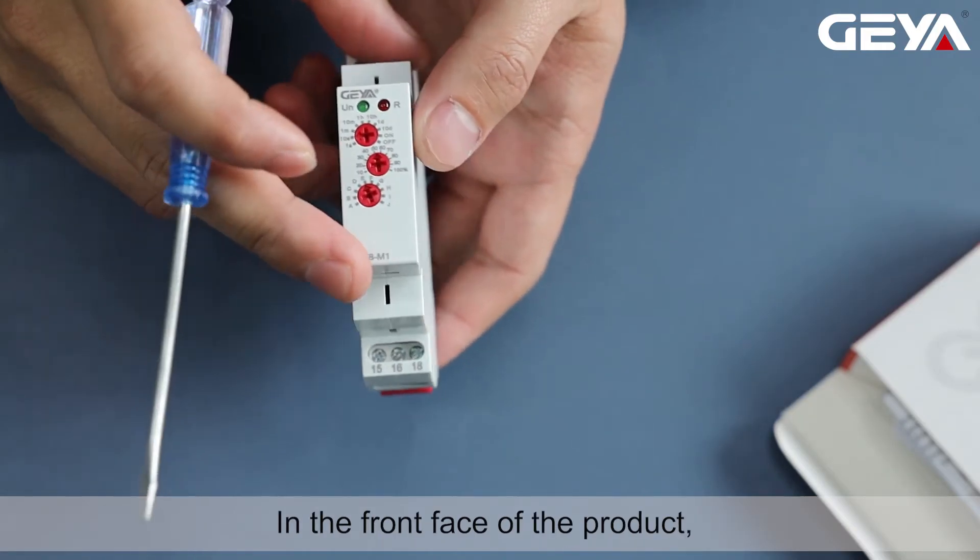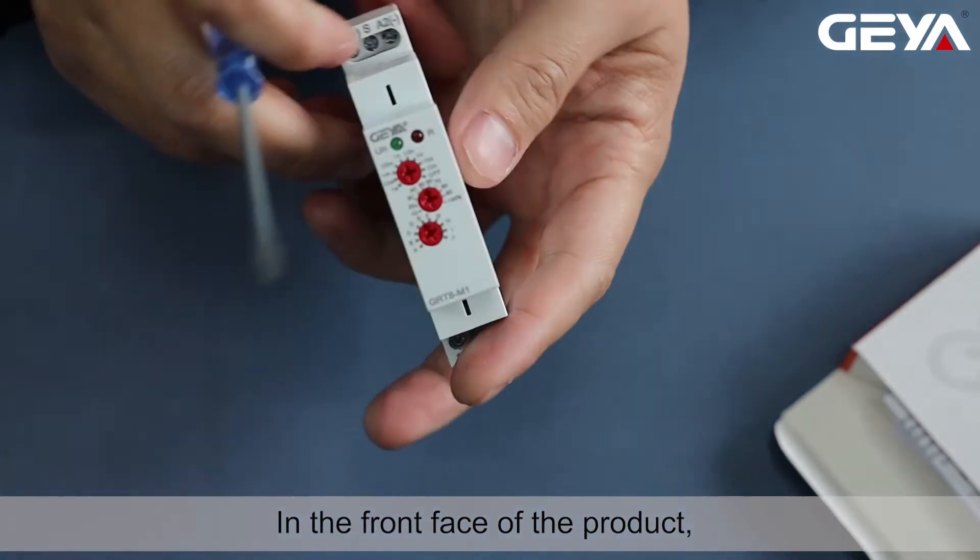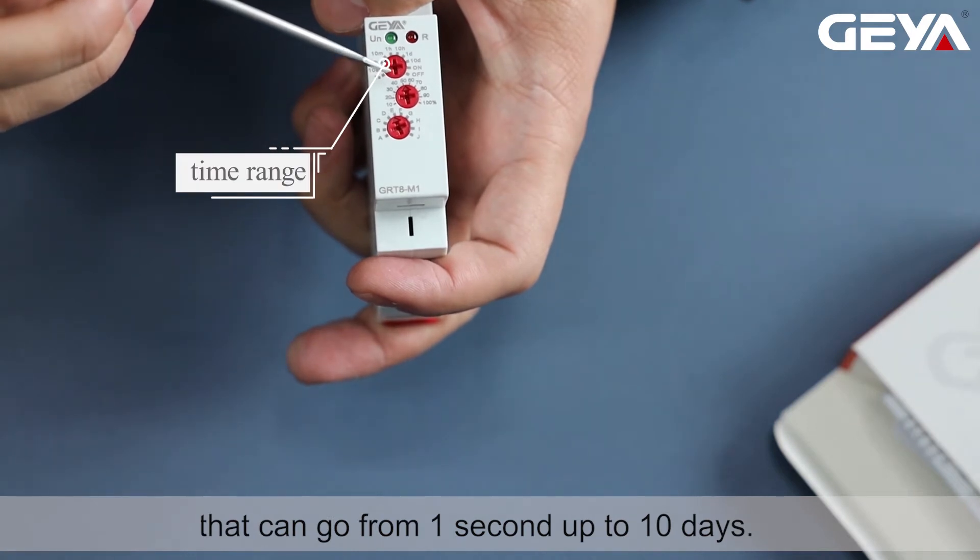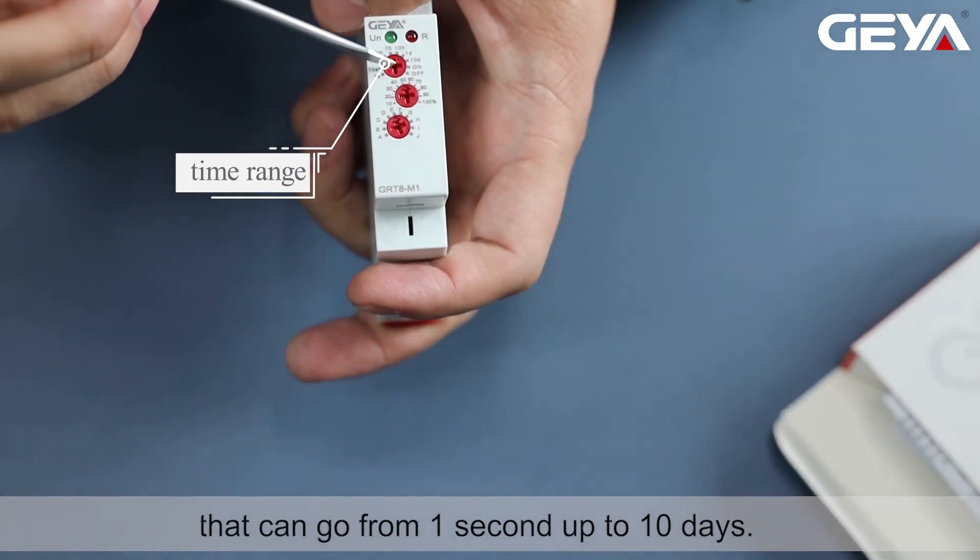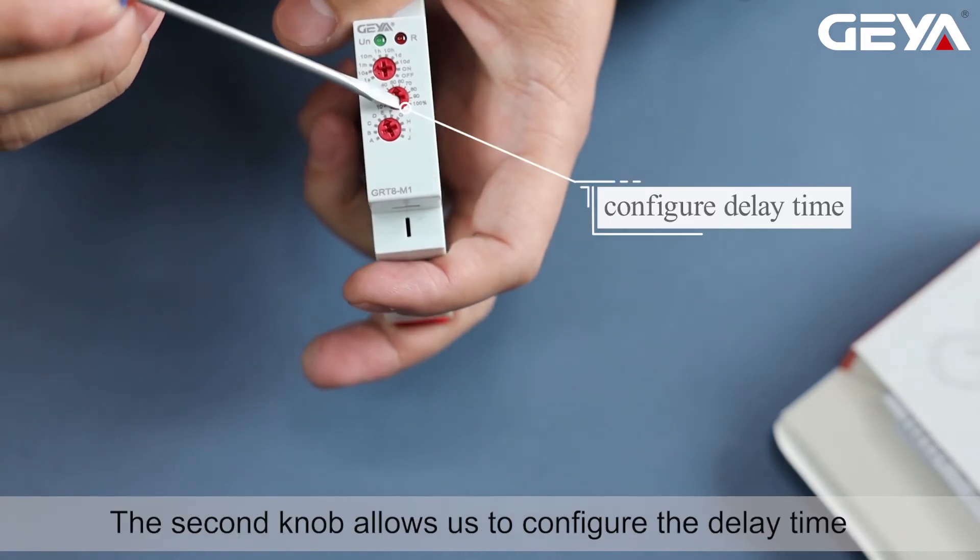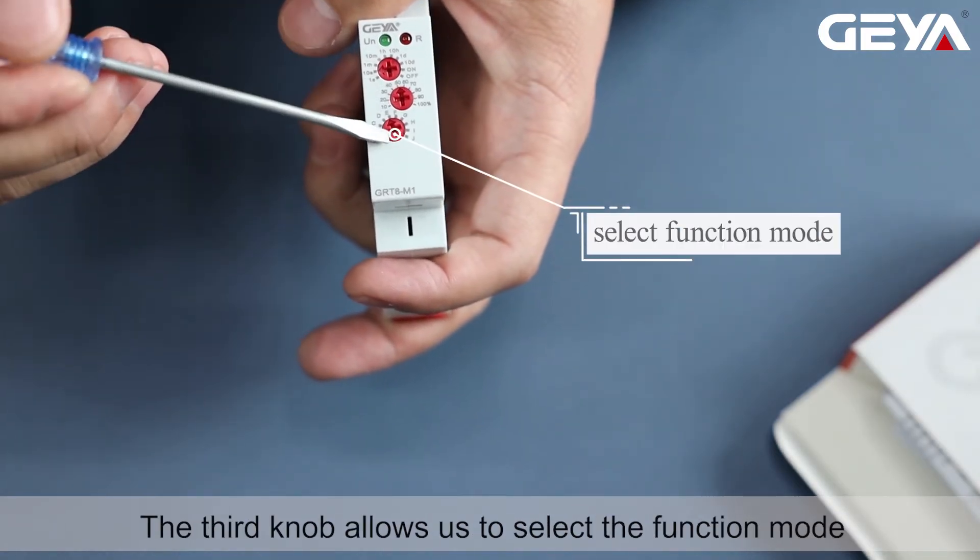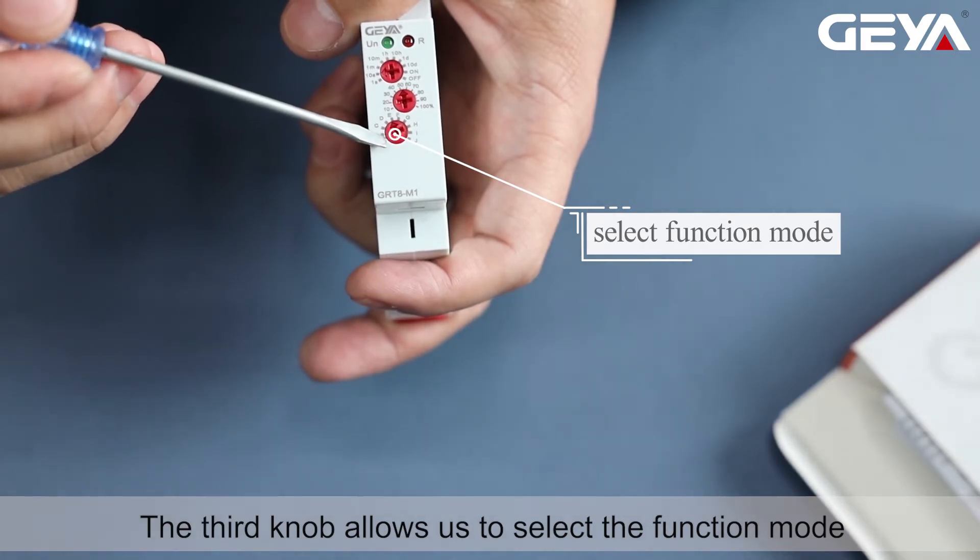On the front face of the product, the first knob allows us to select the time range that can go from 1 second up to 10 days. The second knob allows us to configure the delay time. The third knob allows us to select the function mode.